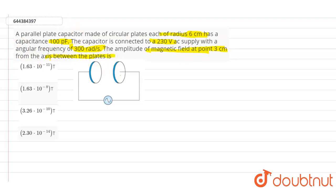The amplitude of the magnetic field at a point 3 centimeters from the axis between the plates is what we need to find.